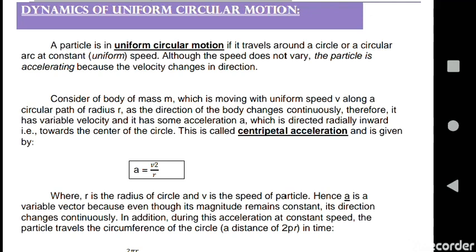Now consider a body of mass m which is moving with uniform speed v along a circular path of radius r from the origin or center of the circle. As the direction of the body changes continuously, therefore it has variable velocity, meaning different velocity and not constant velocity, and it has some acceleration a.